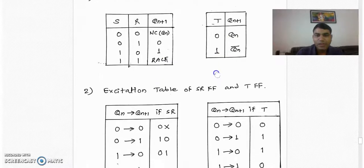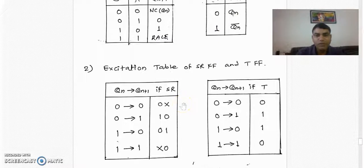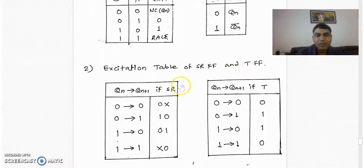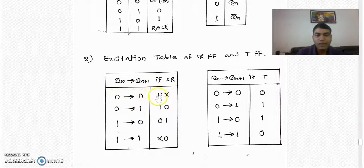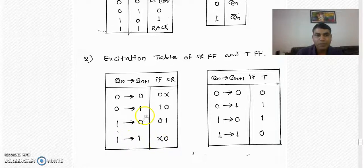The next important step is we should know the excitation table of both flip-flops — source as well as target. Here the source flip-flop is SR flip-flop and the target flip-flop is T flip-flop. In the excitation table of SR flip-flop, we have a transition from present state Qn to next state Qn+1 with corresponding SR values. For 0→0 transition, SR is 0-cross. For 0→1, it is 1-0. For 1→0, SR is 0-1. For 1→1, it is cross-0.